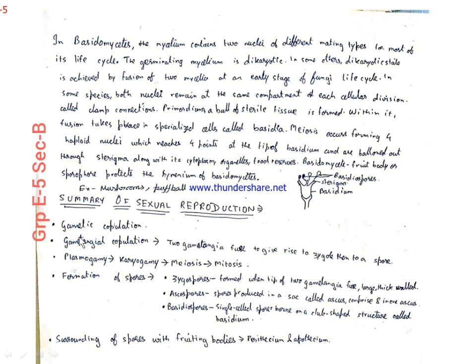Now we come to the summary of sexual reproduction. It comprises of gametic copulation, gametangial copulation, plasmogamy, karyogamy, meiosis, and mitosis. It occurs in the formation of different spores: zygospores in case of Mucor hiemalis, ascospores in case of ascomycetes formed in the sac called ascus, and basidiospores for the Basidiomycetes fungi. The spores are surrounded by fruiting bodies to protect them, that is the perithecium and apothecium.